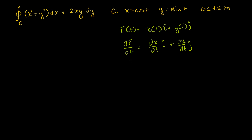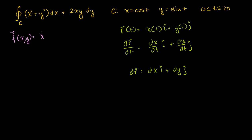We've seen this multiple times. And when we want to get the differential dr, we multiply everything by dt, treating the differentials as numbers you can multiply, and we get dr equals dx times the unit vector i plus dy times the unit vector j. Now if we define our vector field F of xy as being equal to (x squared plus y squared)i plus 2xy j, what is this integral?